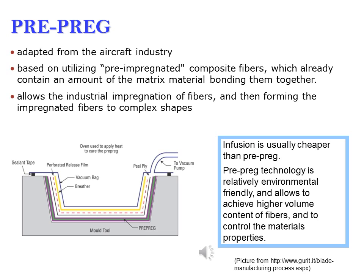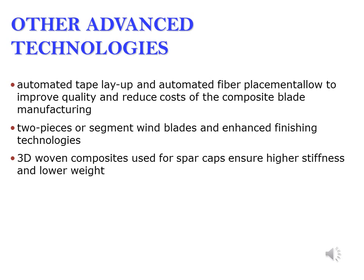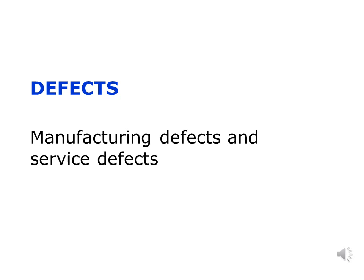Pre-preg, widely used for instance by the Danish wind turbine producer Vestas, allows industrial impregnation of fibers and then forming the impregnated fibers into complex shapes. Lately, automated tape layup, automated fiber placement, two-piece or segmented wind blades, and enhanced finishing technologies have come into use to improve quality and reduce costs of composite blade manufacturing.